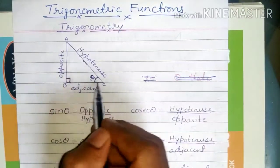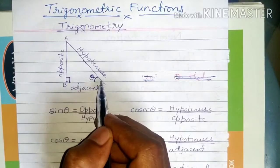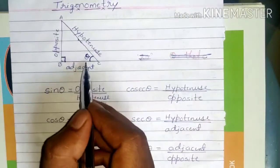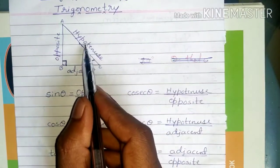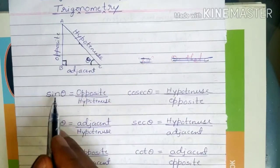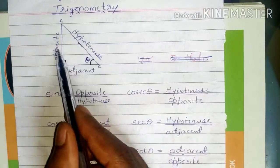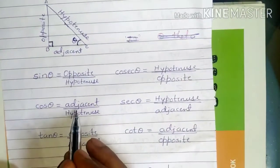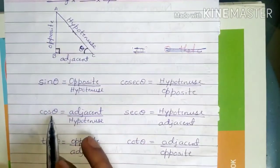The longest side of a right angle triangle is also known as the hypotenuse. Using this, if theta is the angle, the ratio of opposite to hypotenuse is considered as sin theta. In the same way, adjacent by hypotenuse is called cos theta.